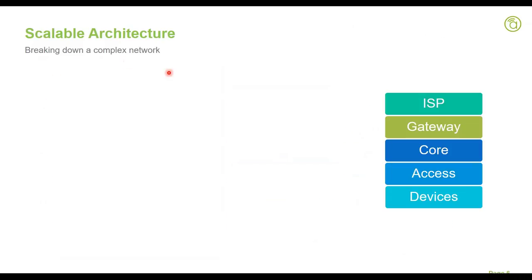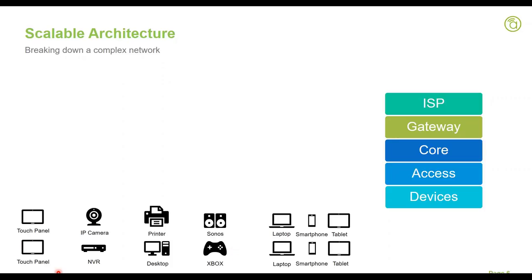Let's take an example of a typical network job. On average, customers will have between 50 to 100 devices on a network. Those devices include control touch panels, IP cameras and NVRs, printers, desktops, Sonos or wireless streaming services, entertainment TVs, and personal equipment like laptops, smartphones, and tablets. Every individual in a household will typically have at least two of those three personal devices, if not all three or more, so you'll be surprised at how many devices there are — on average between 50 and 70.